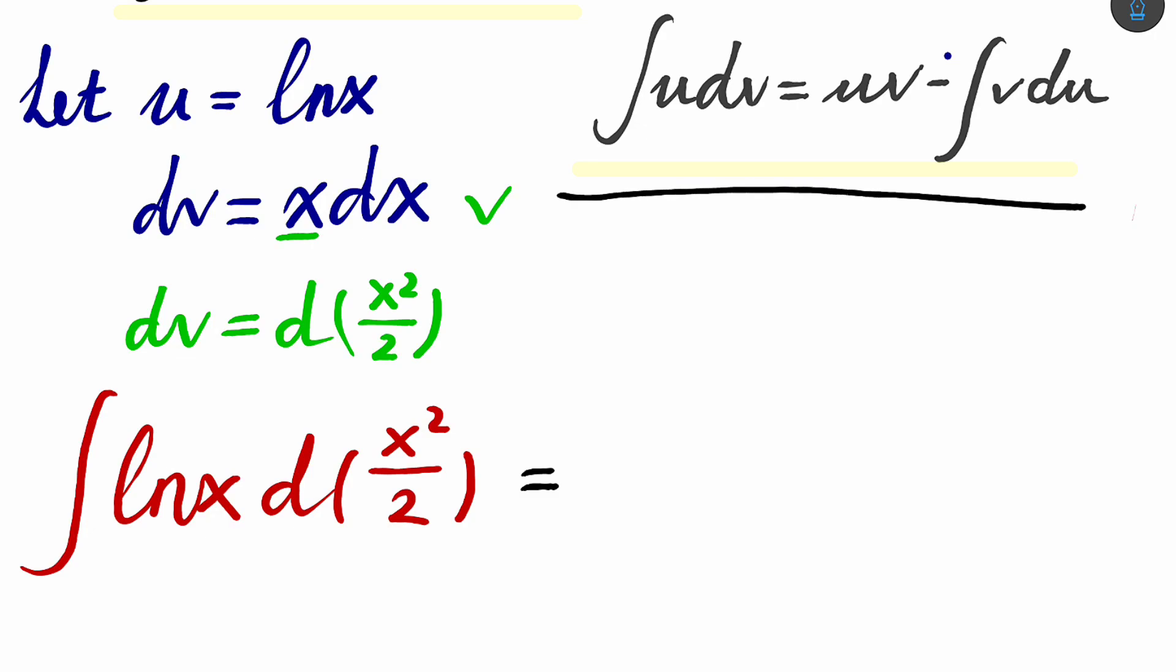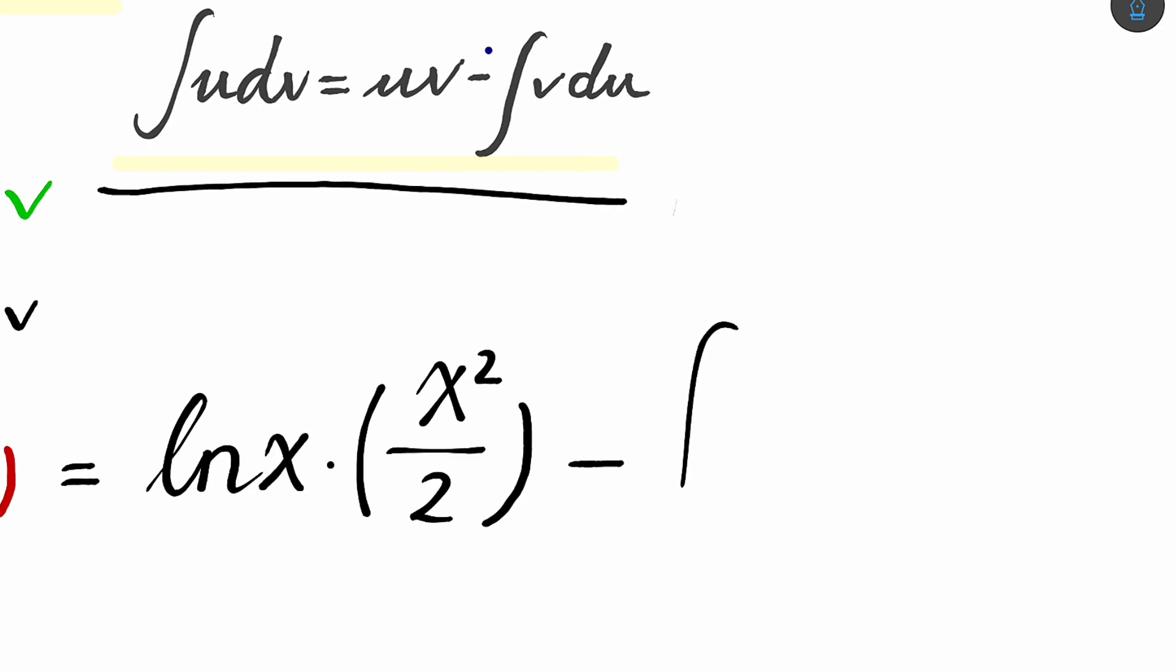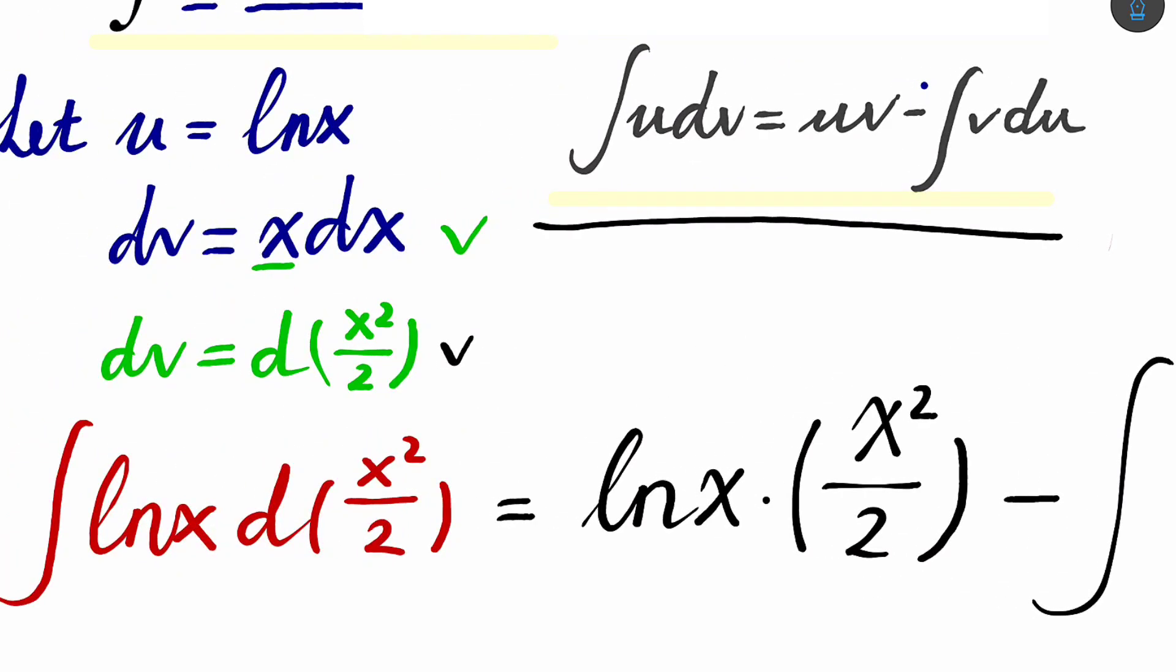And now u is the natural log of x, and dv is equal to d x squared divided by 2. So v is x squared divided by 2. So it's uv. u is ln x. I'll write it here. So it's ln x, natural log of x, and then times x squared divided by 2.